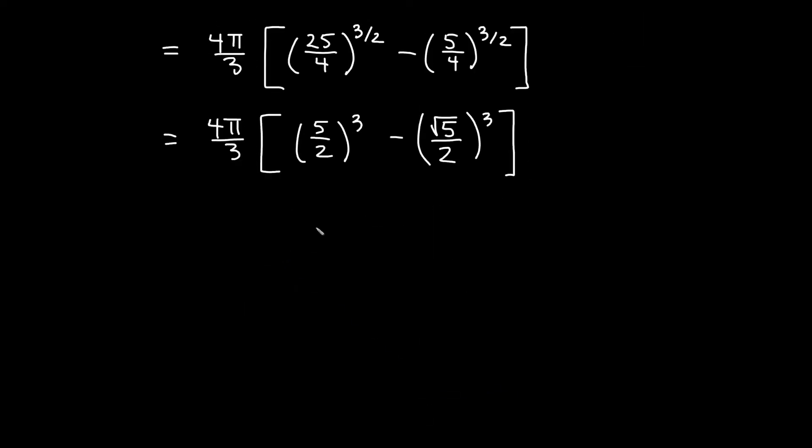Okay let's finish this up. We will get four π over three times five cubed which is 125, two cubed is eight, minus if I have the square root of five cubed. Remember that's like having three copies. Two of those copies give me a five, so I actually get five root five. Two cubed on the bottom again is eight.